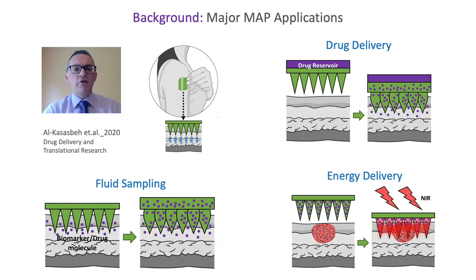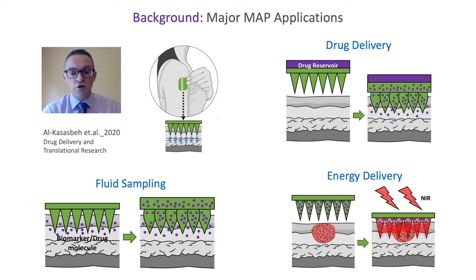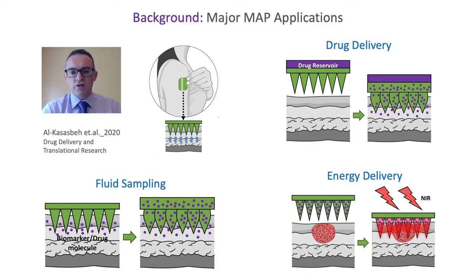Microneedle array patches can be used for many different applications, illustrated in the schematics on this slide from a recent paper in Drug Delivery and Translational Research. The first application is drug delivery — we see that in the top right-hand corner — where a microneedle patch is loaded with or coated with a particular active that we want to deliver into or across the skin.